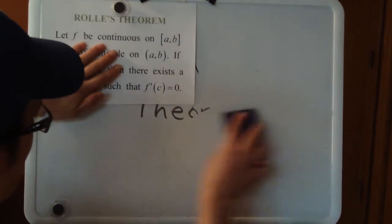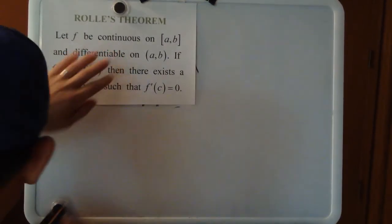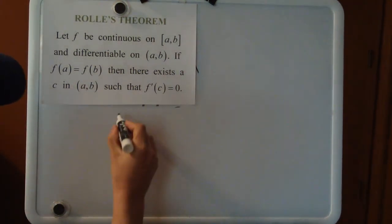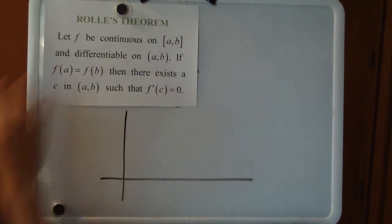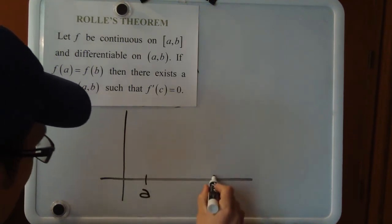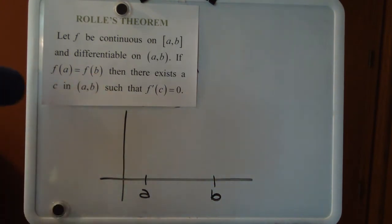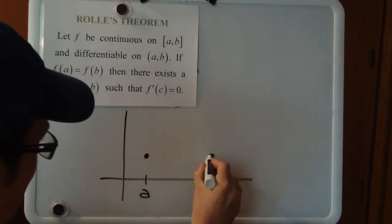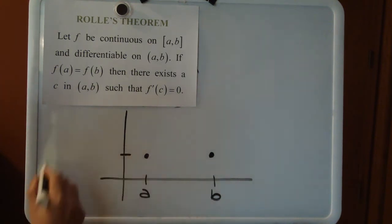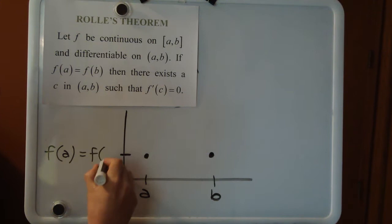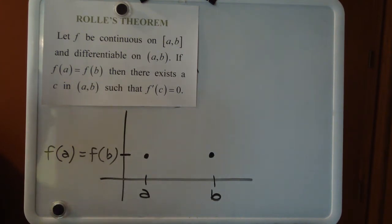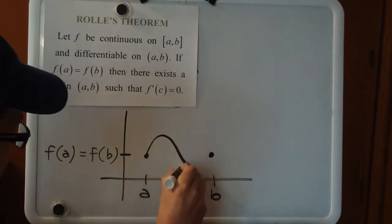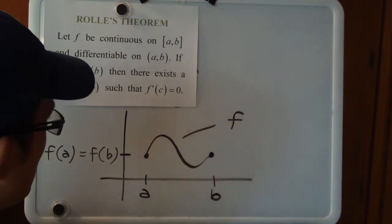I want to take a minute to talk about graphically what this theorem really means. So we'll draw a little picture. We have a continuous function from a to b, and f of a equals f of b, so I'm going to intentionally make these endpoints look like they have the same value. The theorem is pretty forgiving — we just need a continuous and smooth function — so you can draw almost anything here as long as it's continuous and differentiable. We'll call that our function f.